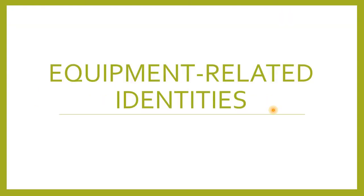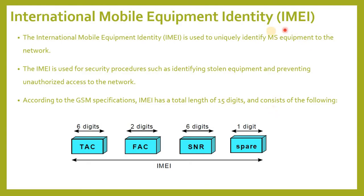Equipment Related Identities. International Mobile Equipment Identity — IMEI. The IMEI is used to uniquely identify mobile station (MS) equipment to the network. It is used for security procedures such as identifying stolen equipment and preventing unauthorized access to the network. According to the GSM specifications, the IMEI has a total length of 15 digits.